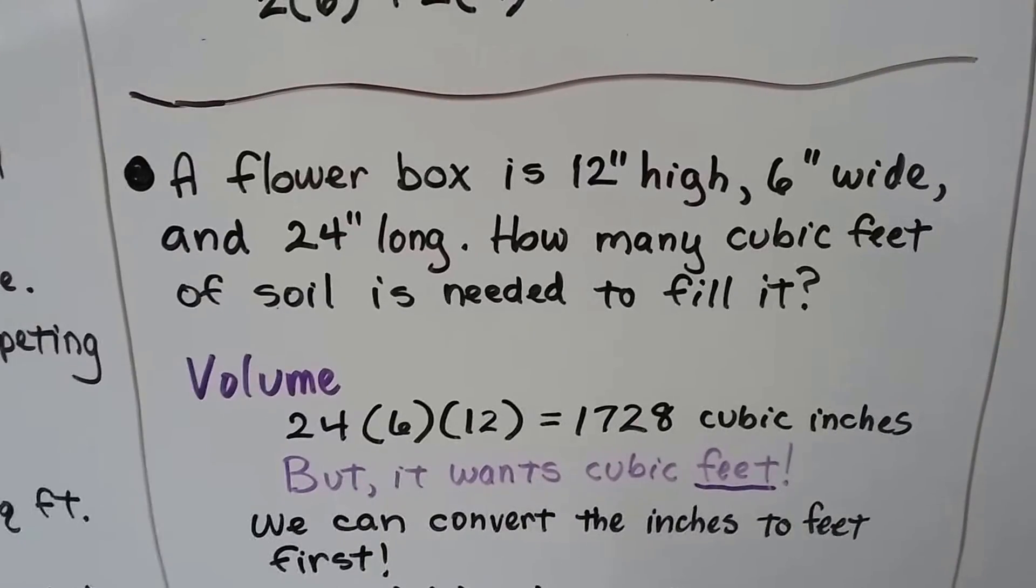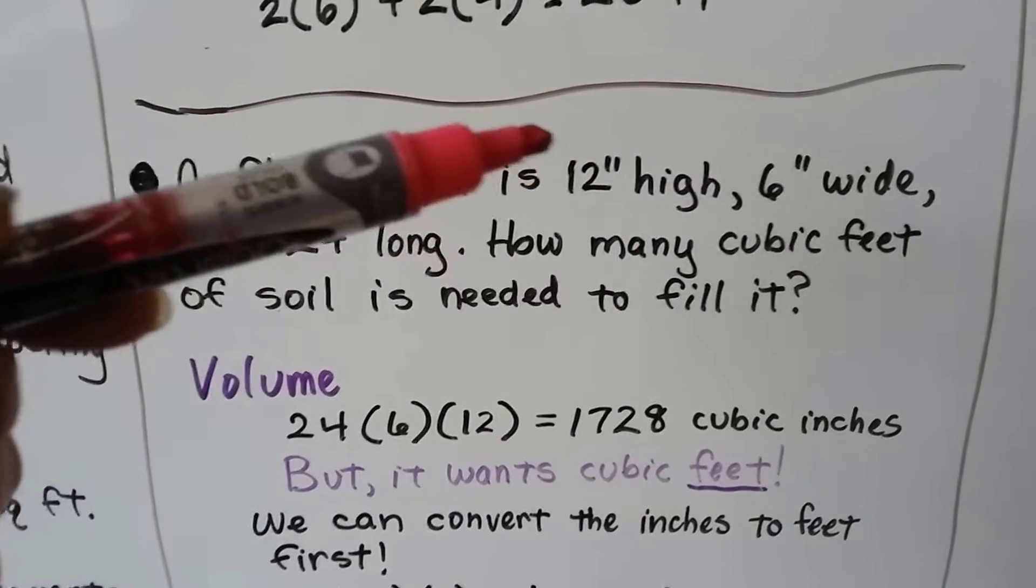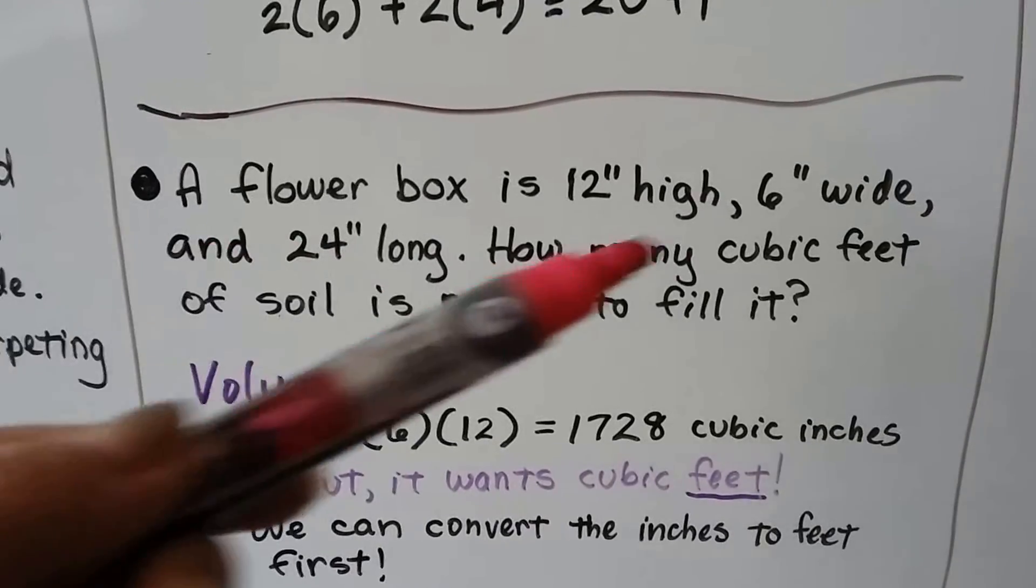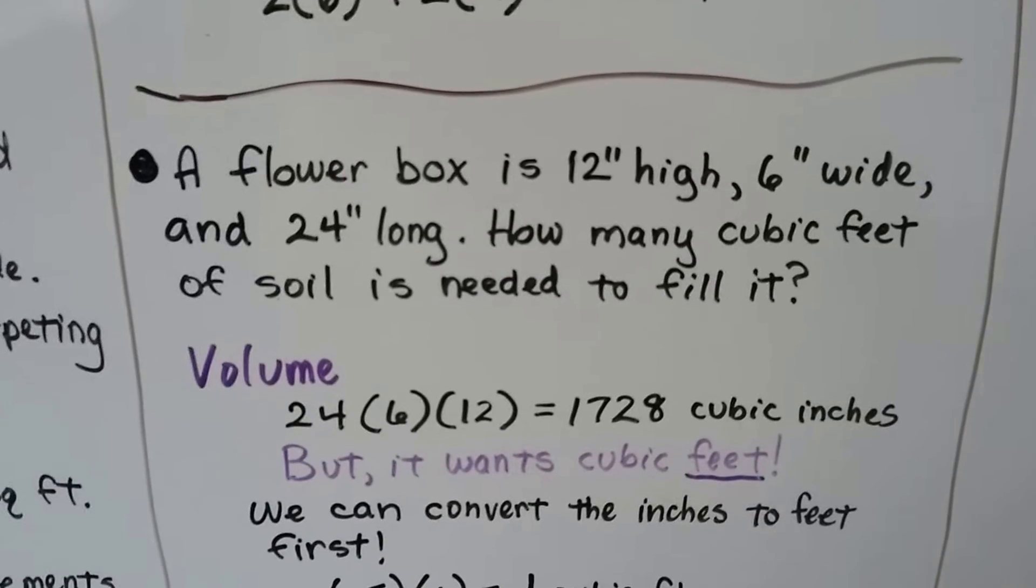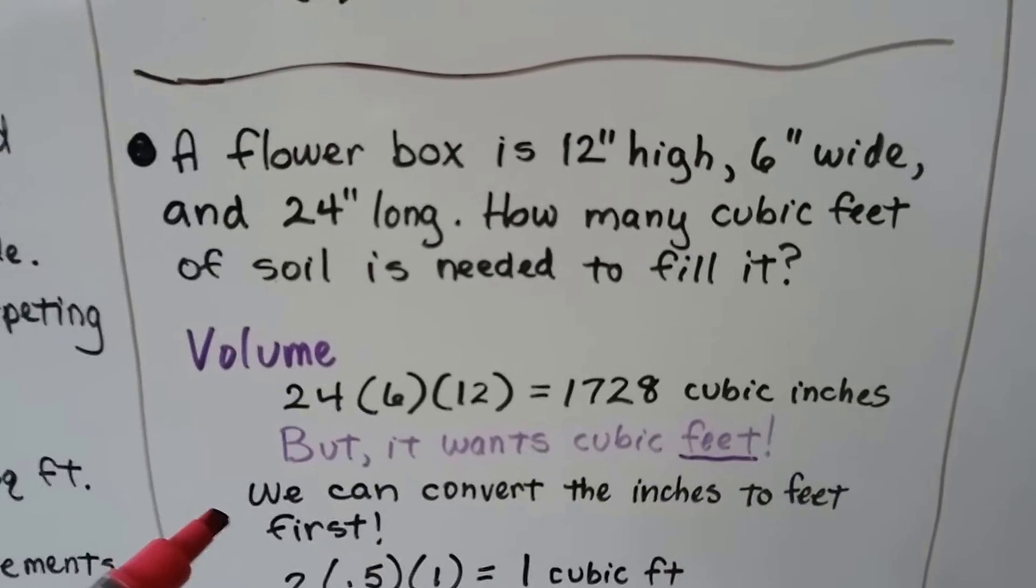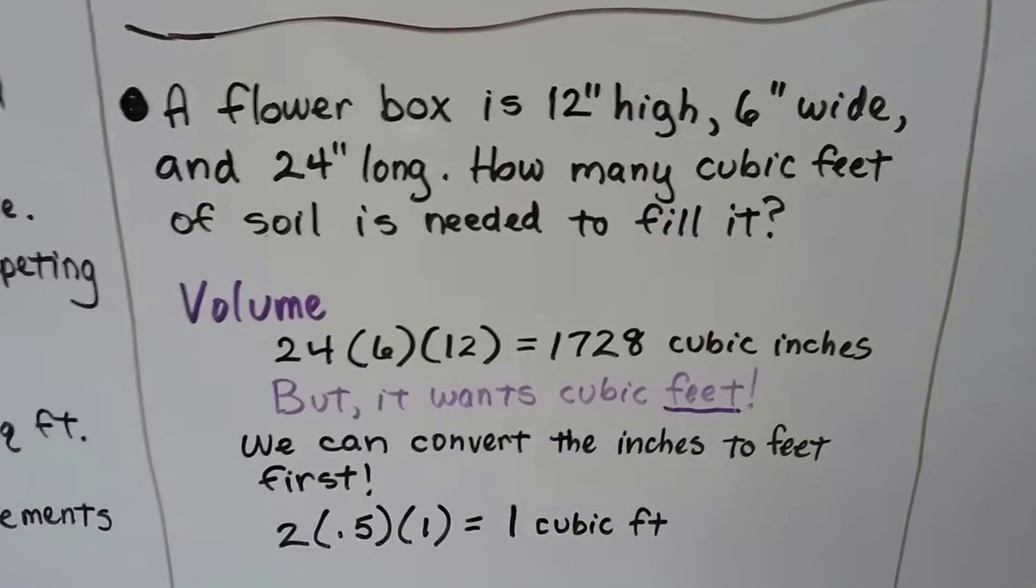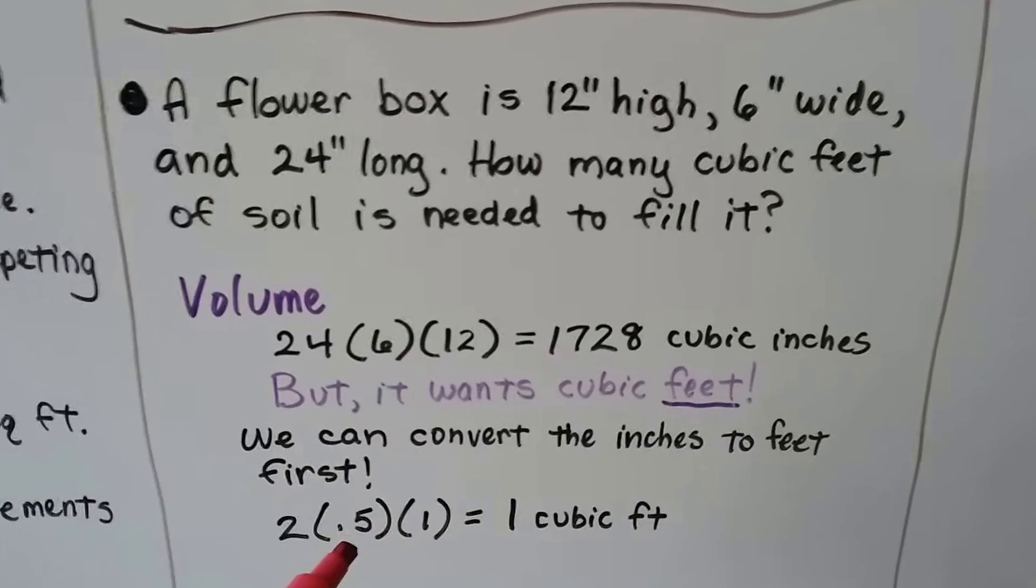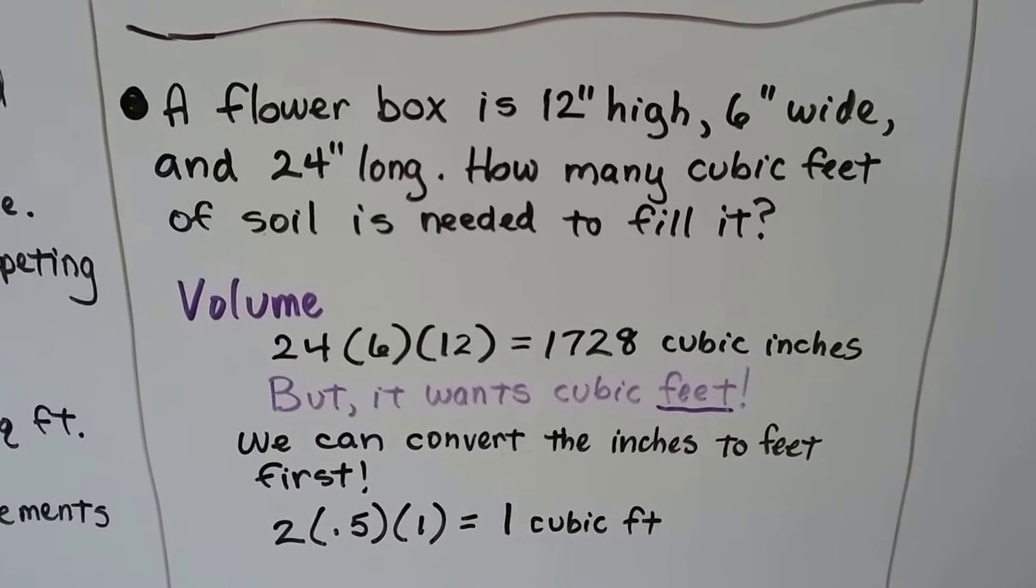Well, the easiest way to solve this, because of the way these numbers are, there's a 12 and there's 12 inches in a foot. There's a 24. That would be 2 feet even. And 6 inches would be half a foot. So if we convert the inches to feet first, we can do 2 feet times 1 foot times half foot. 2 times 0.5, that's for the half, times 1, it gives us 1 cubic foot.